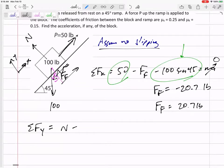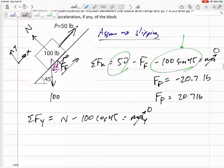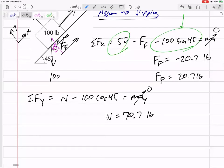Sum of the force in Y: N minus 100 cos 45 equals ma. Is there any acceleration in the Y? No. N is 70.7. So the maximum would be μs N, which would be 0.25 times 70.7 = 17.6 is the maximum.